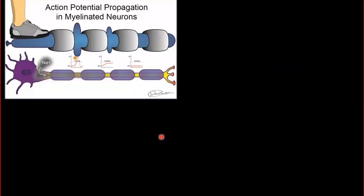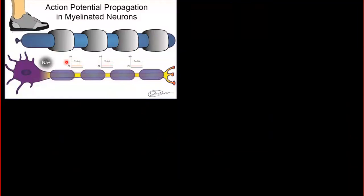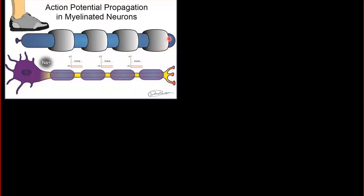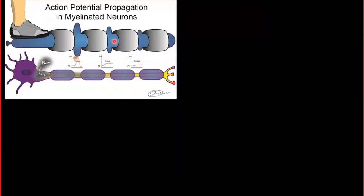Nerve impulse transmission is faster in myelinated nerve fibers because the action potential jumps from one node of Ranvier to another node — this is known as saltatory conduction. The action potential takes place only at the nodal areas, jumping from one node to the next.